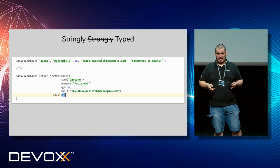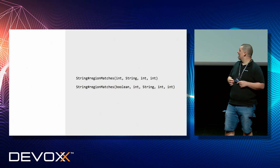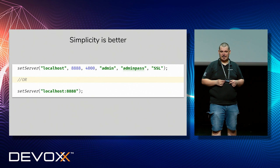That's called 'stringly typed.' Of course it doesn't have to be a String to have the same issue. An example from 'regionMatches' — that would be amazing if anyone here actually knows all those parameters and what they mean. It is quite complicated. So discoverability is better. Simplicity also is better.